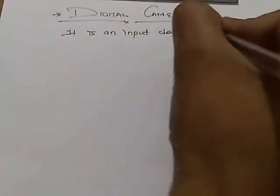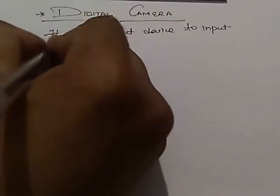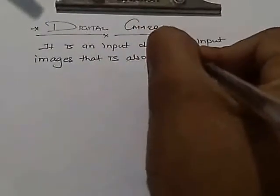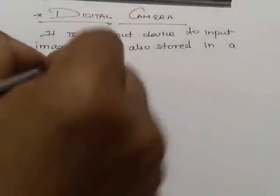The third one we have is the digital camera. The digital camera is an input device to input images that are also stored in a digital format.